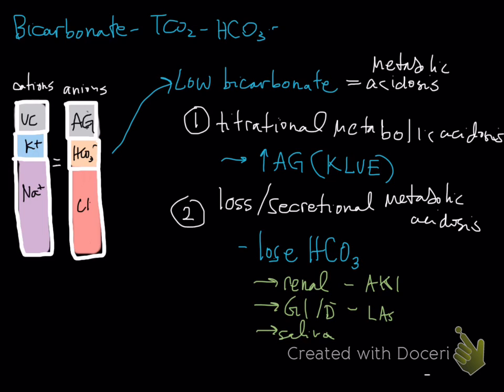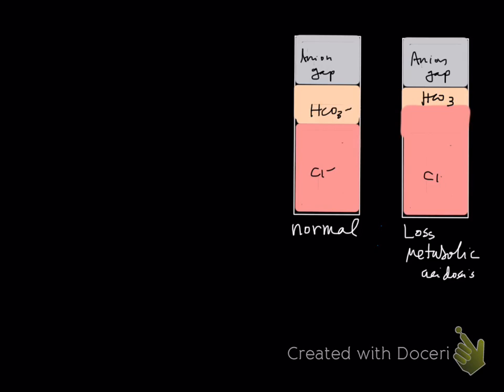With titrational metabolic acidosis, when you're increasing the anion gap, it's going into your bicarbonate and will not affect your chloride. But with secretional or loss metabolic acidosis, you're actually going to change your chloride. On the anion side, the normal state has anion gap, bicarbonate, and chloride.